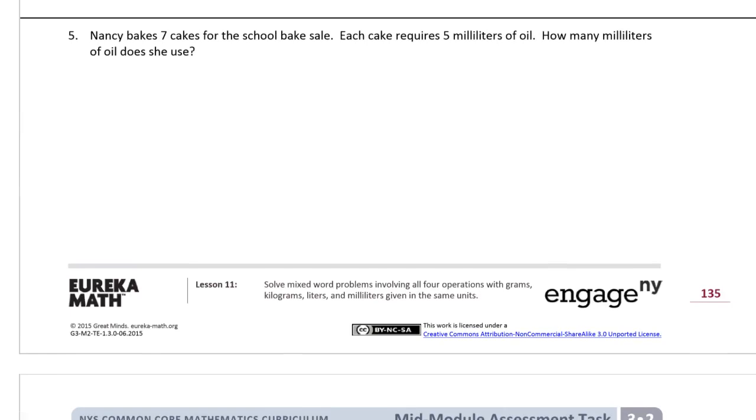So Nancy bakes 7 cakes for the school bake sale. Each cake requires 5 milliliters of oil. I'm guessing it's vegetable oil because it would be a pretty awful tasting cake if she used motor oil. Nancy bakes 7 cakes. How many milliliters of oil does she use? So each cake, here's a cake, and I'm just going to label it 1 cake, uses 5 milliliters of oil in it.